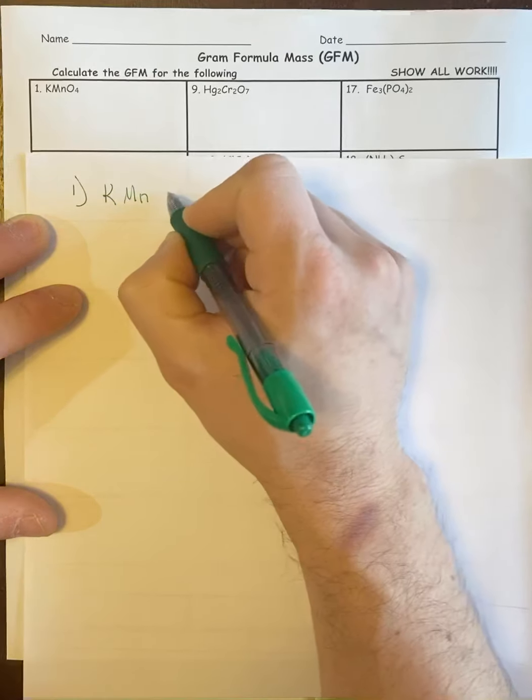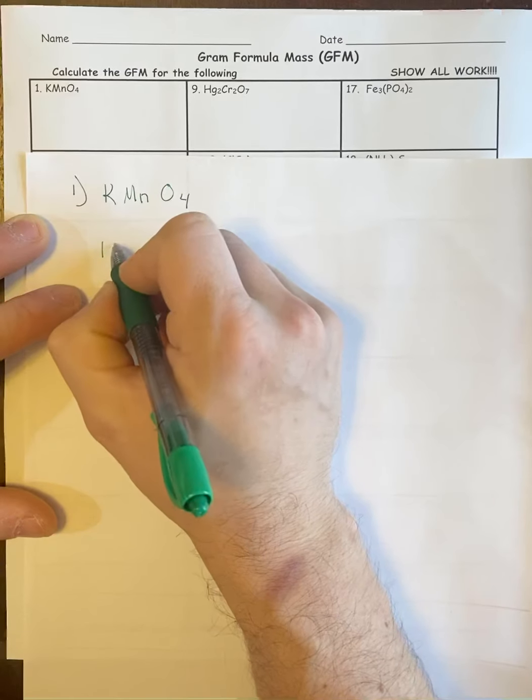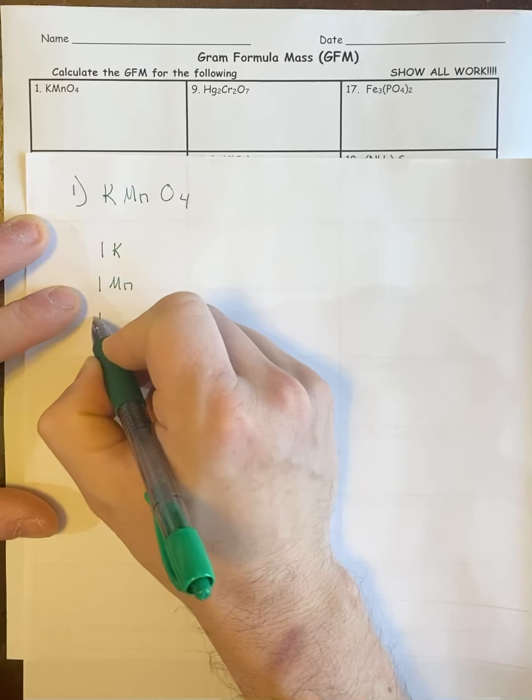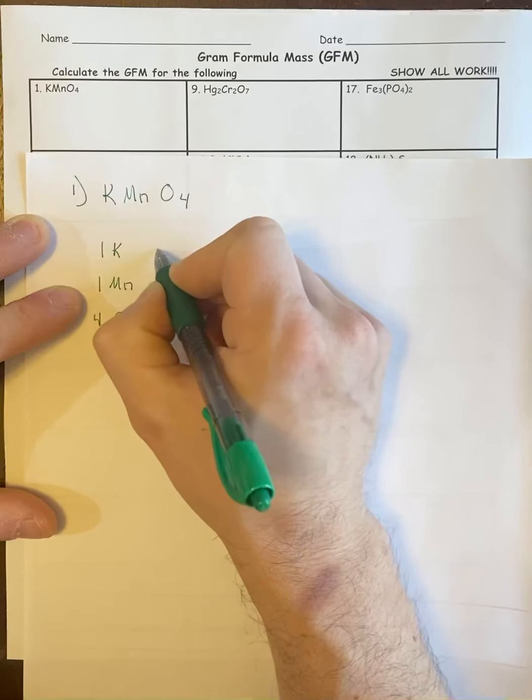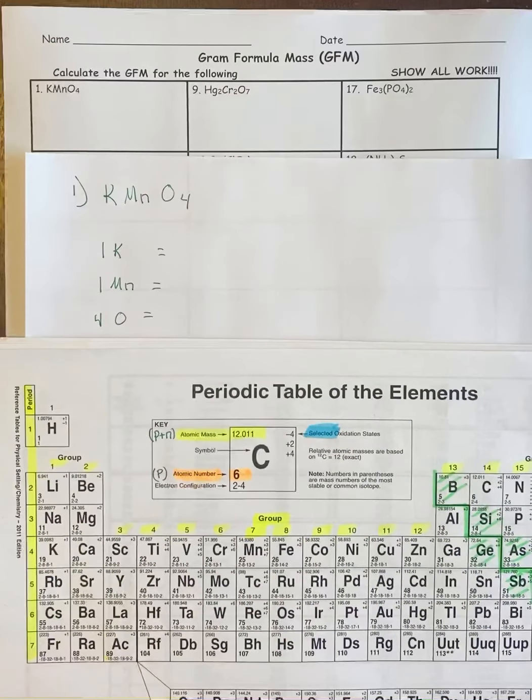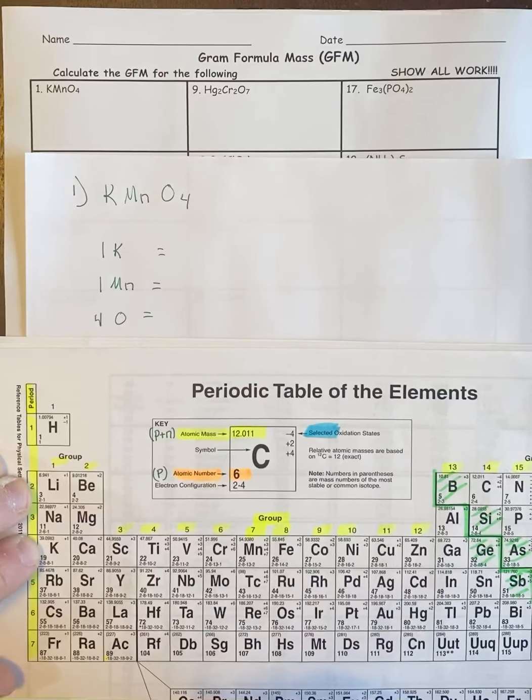KMnO4. What you have to understand is that there's one K, one Mn, and four oxygen. So if we take the numbers off your periodic table—you are going to need your periodic table out—if we take the numbers off your periodic table and we add them up and round them to a whole number.